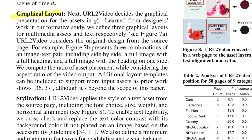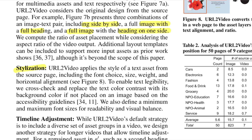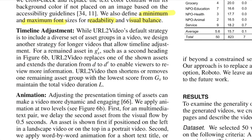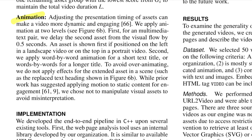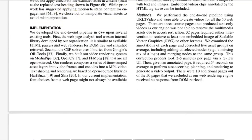For graphical layout, fixed templates are used — such as side-by-side, full image with full heading, or full image with heading on one side — to incorporate text and multimedia segments. For stylization, font size and weight are based on the source page, with defined minimum and maximum font sizes for readability and visual balance. Time adjustments apply CSP optimization. For animations, word-by-word animation is used for short text, or phrase-by-phrase for longer titles.